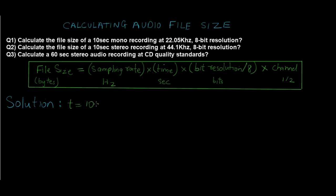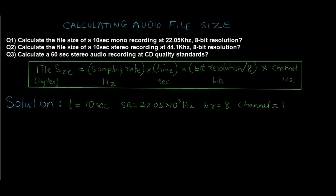For question number 1, the data we have is: time = 10 seconds. The sampling rate is given in kilohertz, so we convert it — SR = 22.05 × 10³ Hz. The bit resolution BR = 8 bits. The channel is 1 because it is a mono recording, so the channel value is 1.